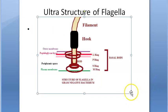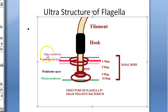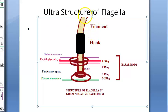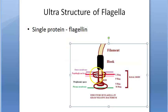Now the ultrastructure of the flagellum - you have to draw this diagram in the exam if they ask about structure. The electron microscope reveals that the bacterial flagellum is composed of three parts: a filament, a hook, and the basal body. The filament is the longest portion of the flagellum; it extends from the cell surface to the tip and is a hollow rigid cylinder made up of a single protein called flagellin.